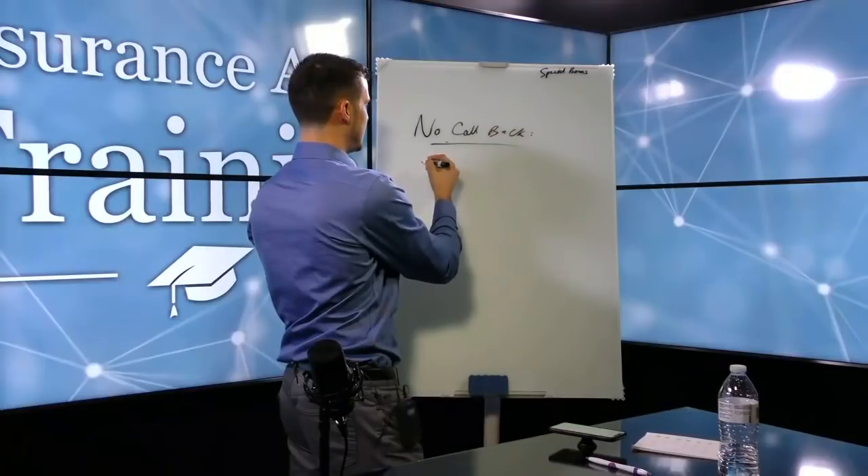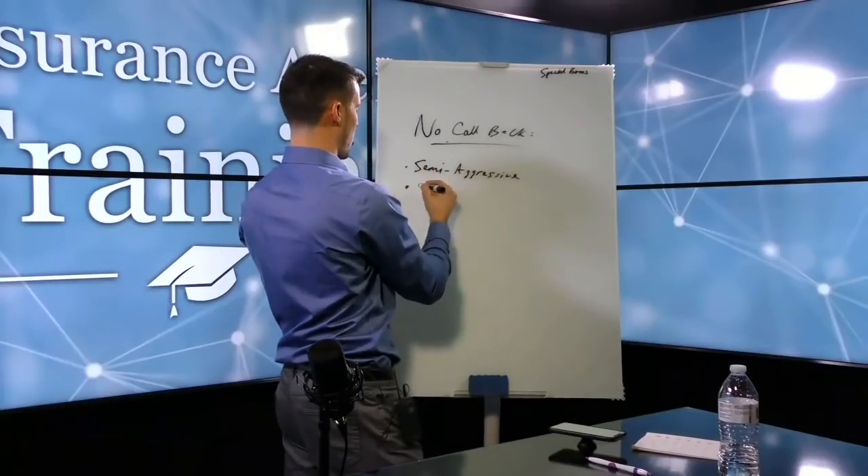There are two different ways you can use the no callback close. There's the semi-aggressive way, and there's the super-aggressive way. Not everyone will be comfortable with using these, some agents won't be comfortable with using any of these.